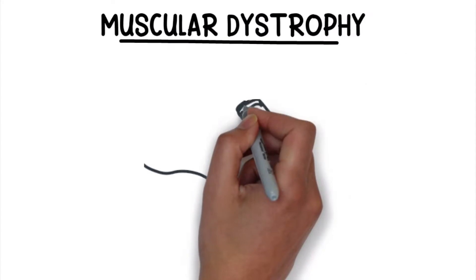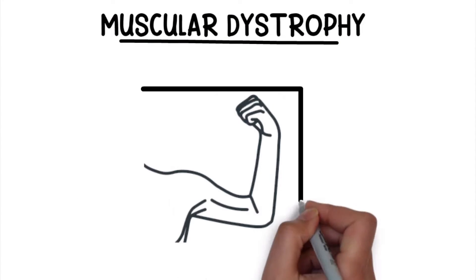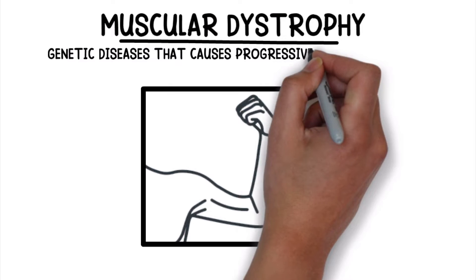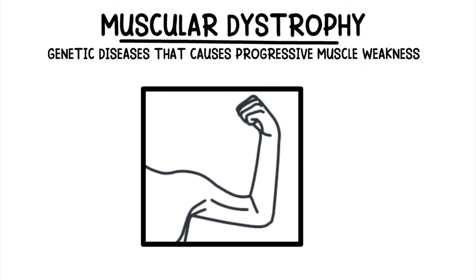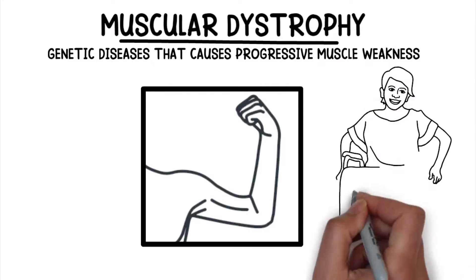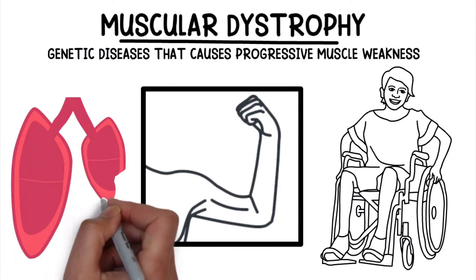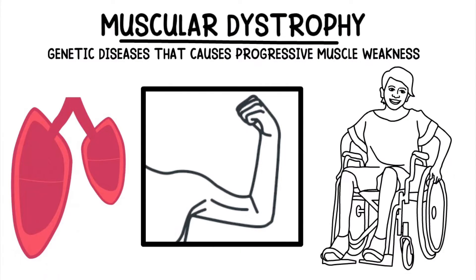Muscular dystrophy refers to a group of genetic diseases that causes progressive muscle weakness, which leads to the inability to walk and difficulty breathing. We created this video to cover the medical definition and provide a quick overview of the topic. So if you're ready, let's get into it.